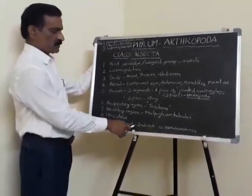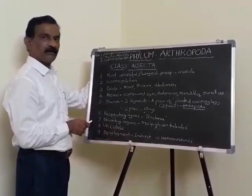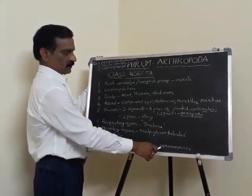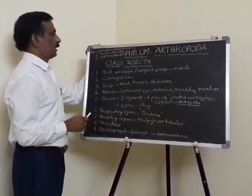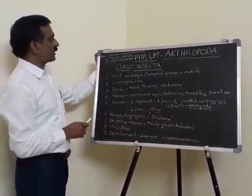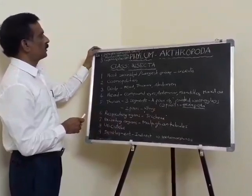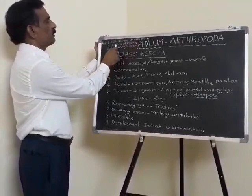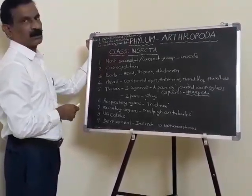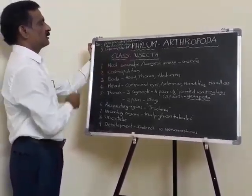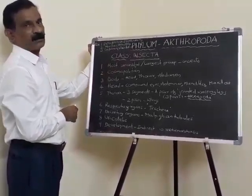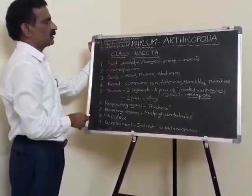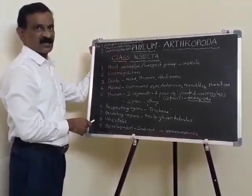Development is indirect with many larval stages and it also exhibits the phenomenon of metamorphosis. The most common examples of this class include Periplaneta, commonly known as cockroach; Musca, the housefly; and Lepisma, the silverfish. These are the three examples of class Insecta.